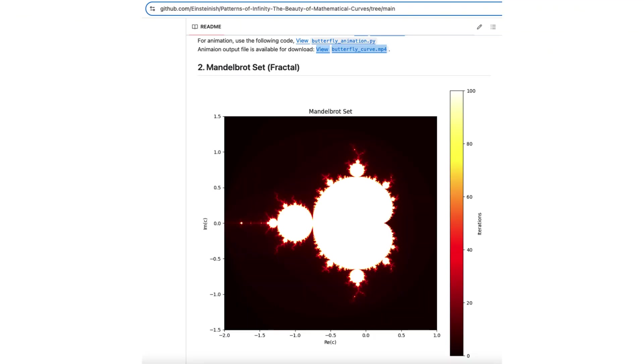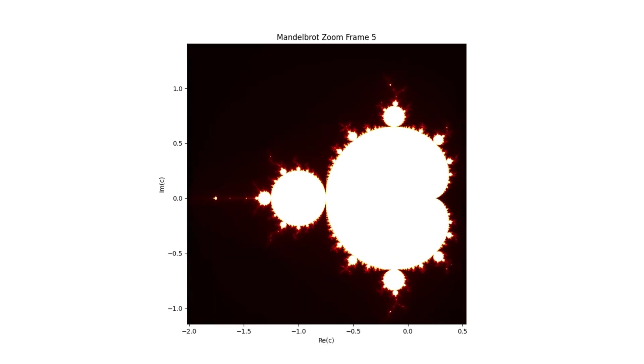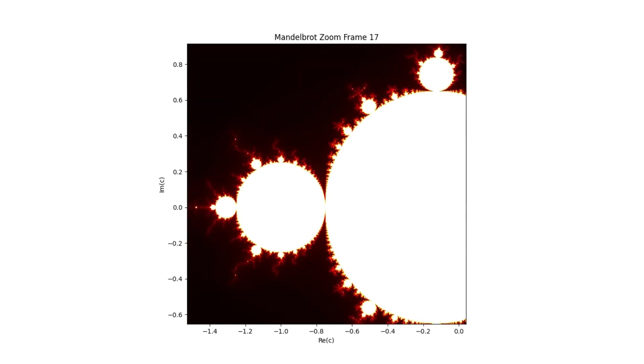The Mandelbrot set is one of the most famous mathematical visuals, a fractal where infinity unfolds within itself. Generated by a simple recursive equation, it reveals a never-ending landscape of self-similar structures no matter how much you zoom in.